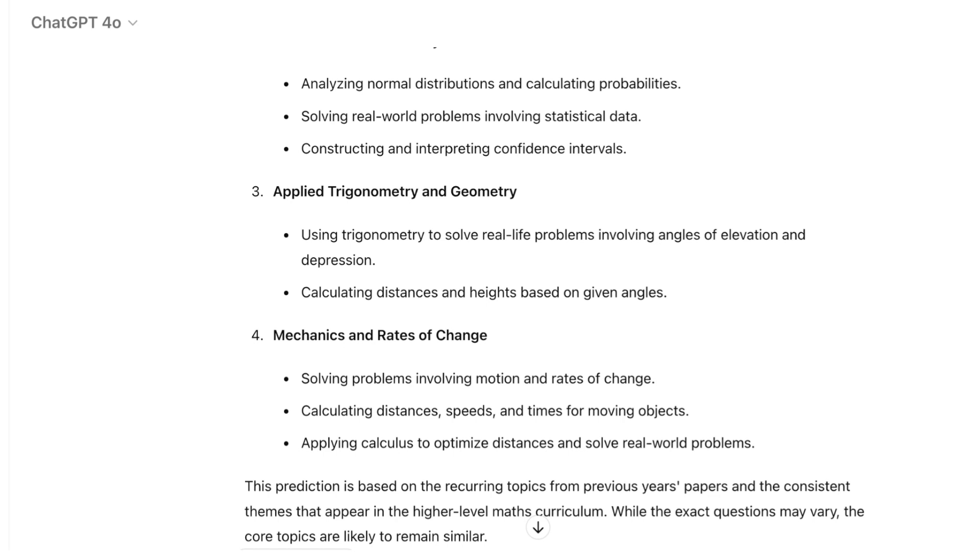Analyzing ChatGPT's predictions, there are a few things to be cautious about. For instance, question 10 mentions calculus and rates of change, topics which typically appear on paper 1 rather than paper 2.